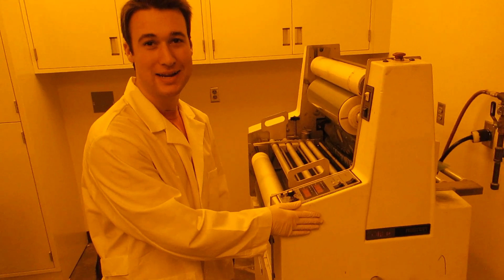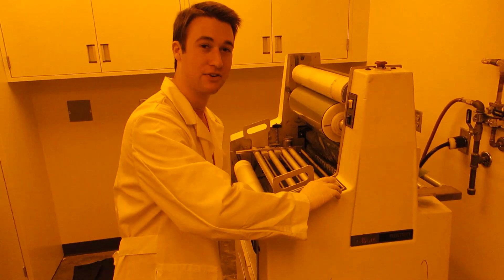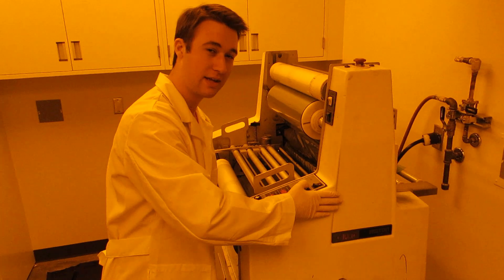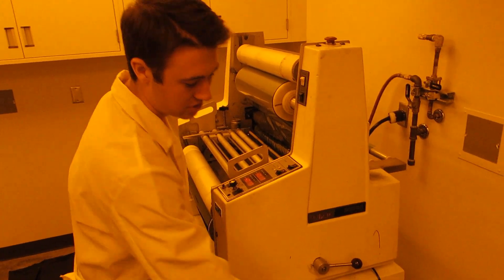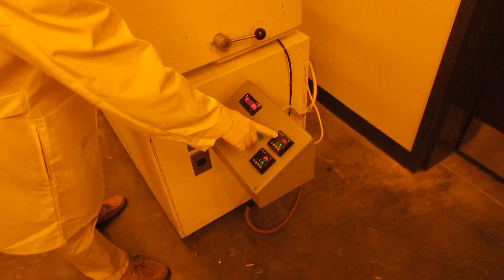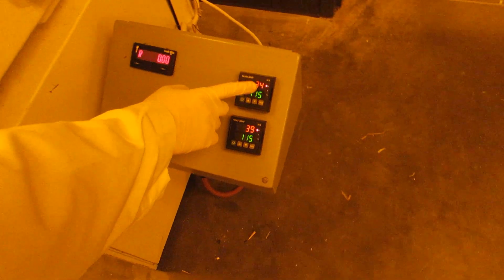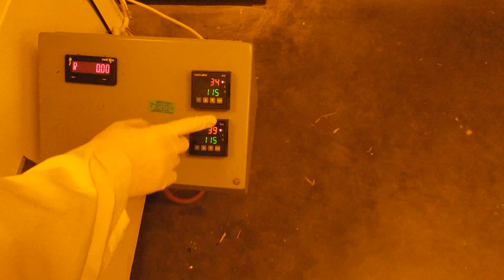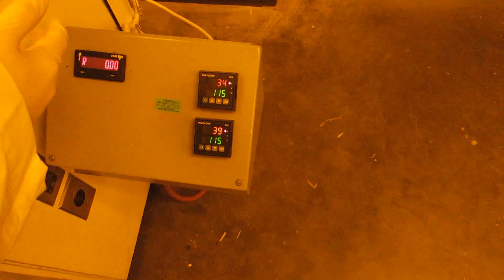All right, so this is the laminator. You have to first power it on, then turn on the heaters which right here the temperature shows up in Celsius. We need to get these up to 115 like it says. Once it's that, then we can begin laminating.